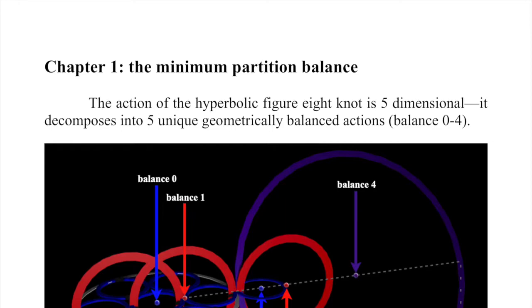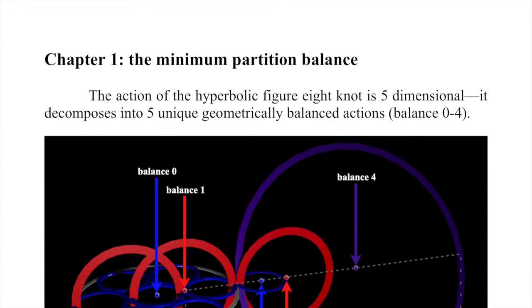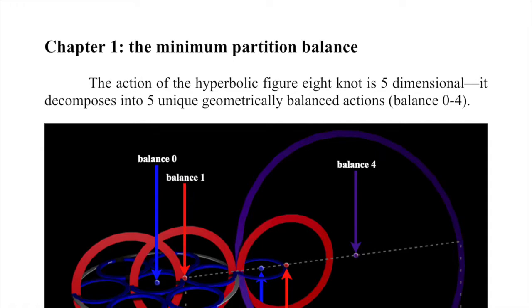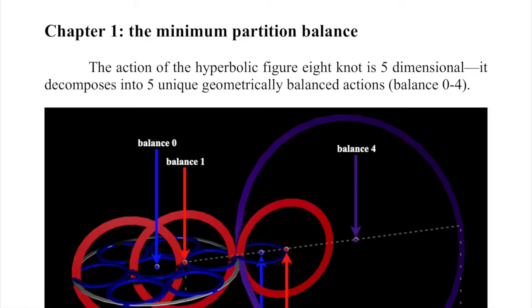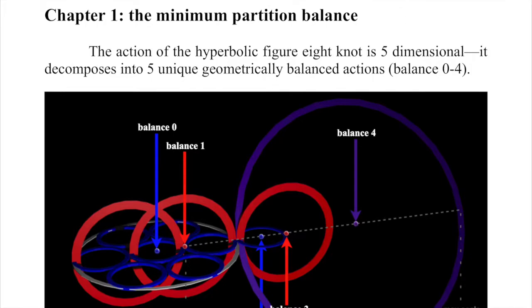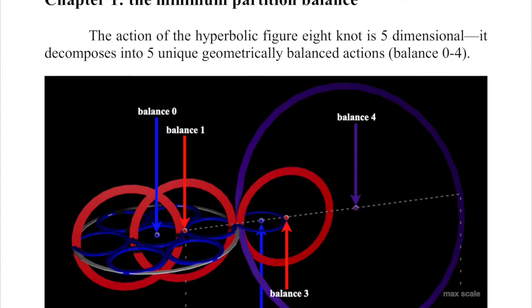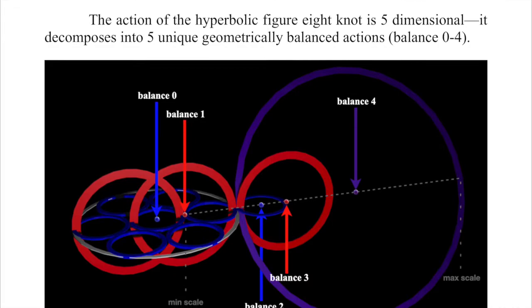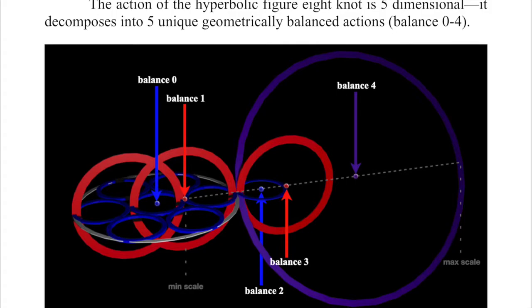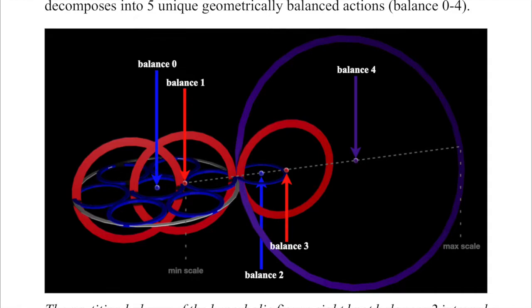Chapter 1: The Minimum Partition Balance. The action of the hyperbolic figure-eight knot is five-dimensional — it decomposes into five unique geometrically balanced actions, labeled balance 0, 1, 2, 3, and 4. Balances 0 and 1 belong to the internal construction of this geometry, and the external construction of those boundaries forms entirely within balance 4, in the purple domain. In this construction, there is a minimum scale — a smallest thing, the internal smallest piece — and there is a largest thing, the external limit of the domain.